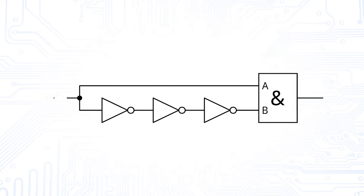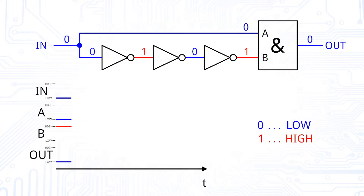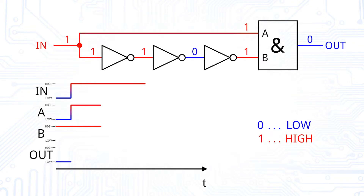The inverters simply add some delay to one of the paths. Let us assume the input is low. This also means that the output is low, as the AND gate's inputs are low and high. But what happens if the input changes to high? The high input value propagates to the AND gate quite fast over the path without inverters, forcing the AND gate to switch its output to high, as it sees two high values. You can also see this in the timing diagram.